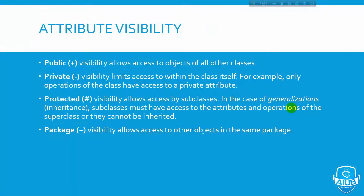Now, attribute visibility. What is public? Public visibility allows access to objects of all other classes. Private visibility limits access to within the class itself — only operations of the class have access to private attributes. This is the limit for private access.